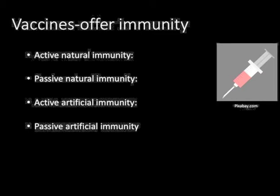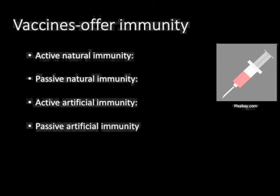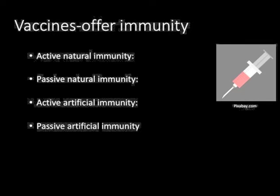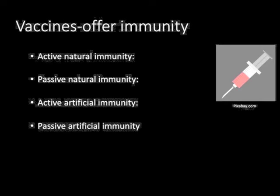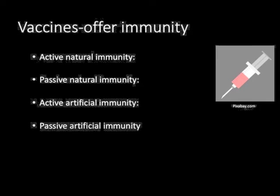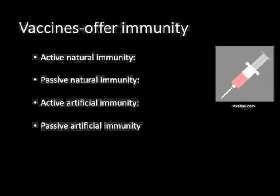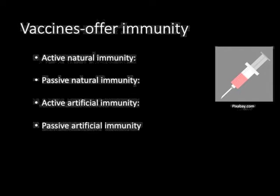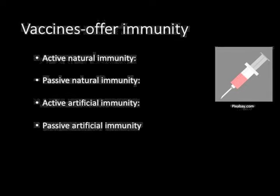Passive artificial immunity is when antibodies from a donor are given to an at-risk patient. This protection is temporary. For example, a child with leukemia is exposed to chicken pox and has never been vaccinated. Antibodies specific for chicken pox are given to the child to stop the child from developing this disease, which would be devastating.